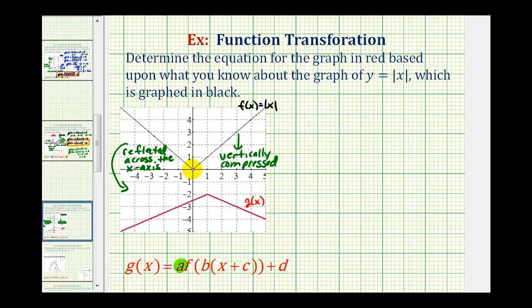Also notice the v, or the low point on the basic absolute value function is at the origin, but the high point of the reflected function is the point here at one negative two, which means the graph has been shifted right one unit and down two units.